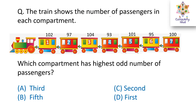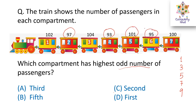The next question: a train shows the number of passengers in each compartment, numbered 1 to 7. Which compartment has the highest odd number of passengers? Odd numbers end in 1, 3, 5, 7, and 9. Based on this, our odd numbers are 97, 93, 101, and 95. The greatest is the three-digit number 101, which is in the fifth compartment. Hence the right answer is option B: fifth compartment.